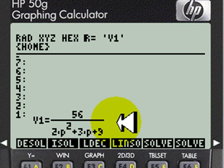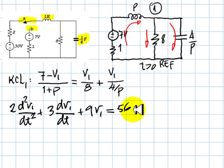Observe the coefficients of the differential equation: 2, 3, and 9. We can write that equation using Heaviside's notation like this. The coefficients of the denominator 2, 3, and 9, and the right hand side, 56.